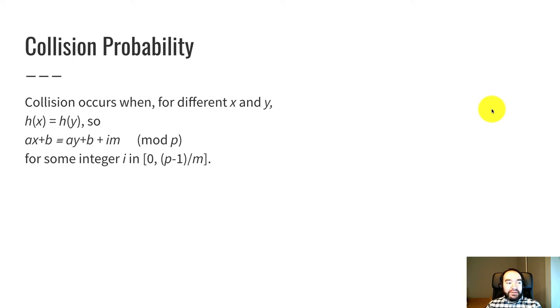So in our system where we're generating these with the linear equation AX plus B and AY plus B, a collision happens when AX plus B is congruent to AY plus B plus some IM mod P. So that means if I am doing mod P arithmetic on both sides here, if AX plus B gives us the same integer as AY plus B plus some IM, where I is some integer in the range zero through P minus one minus M. If this happens, then we have a collision.